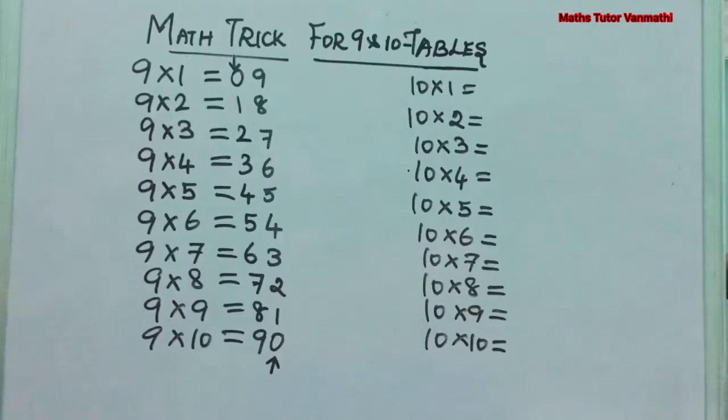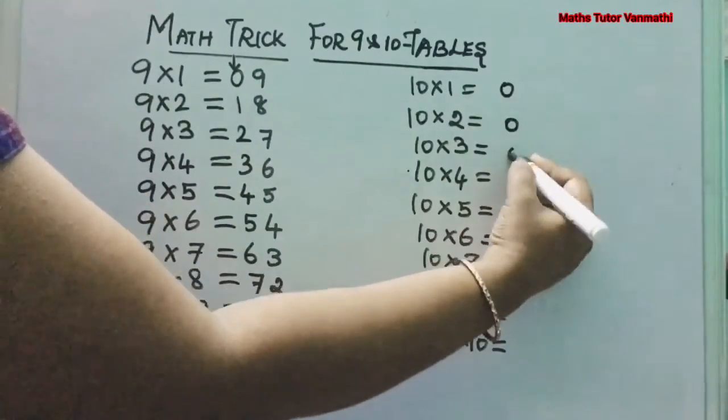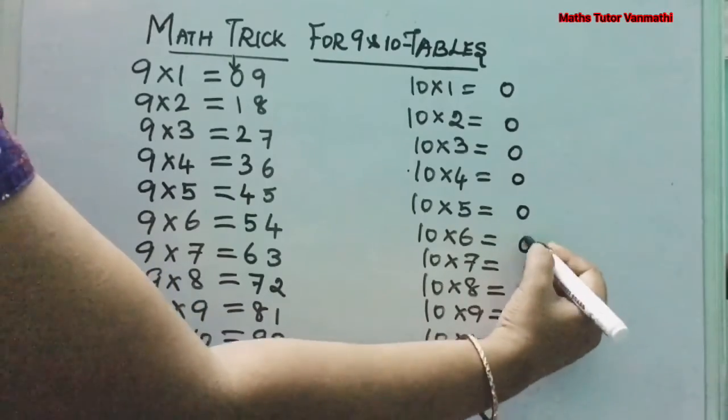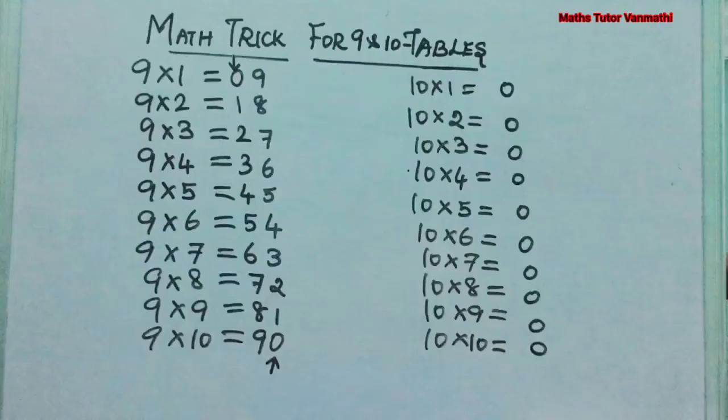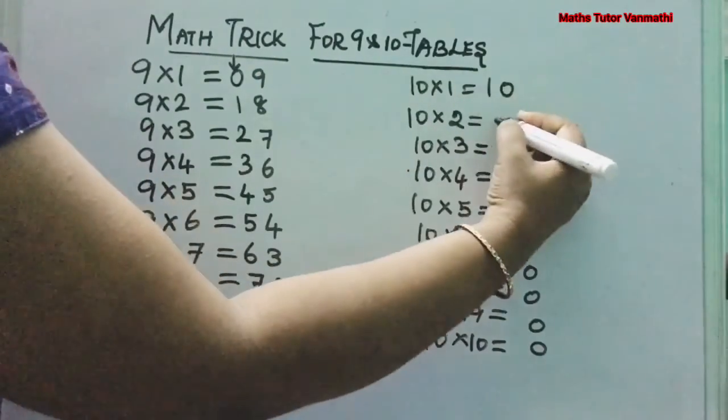Next we can see the 10 tables. So, 10 tables is very easy. It always ends with 0. So, your answer will be every answer ends with 0 only. Next, you are going to put the same 1 to 10 numbers. That is your natural numbers from 1.